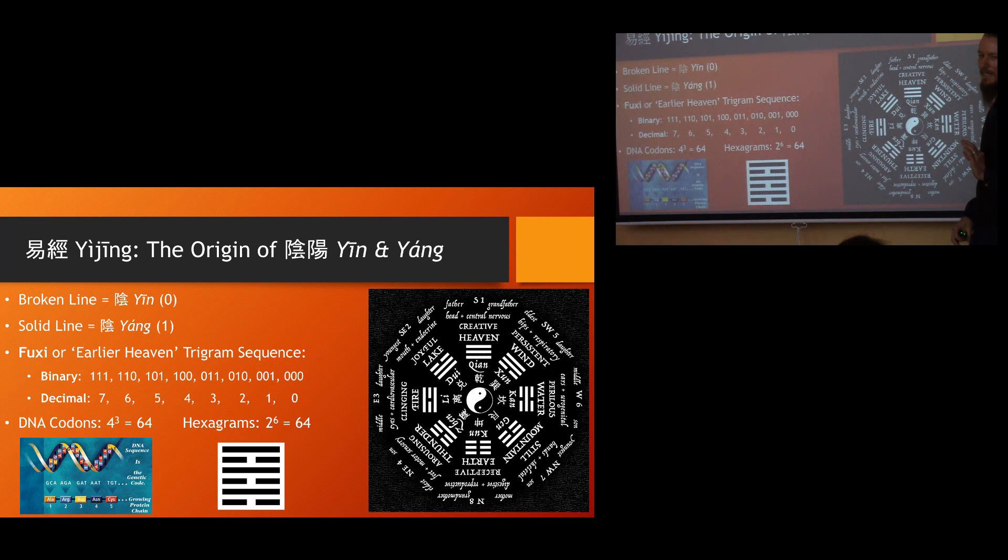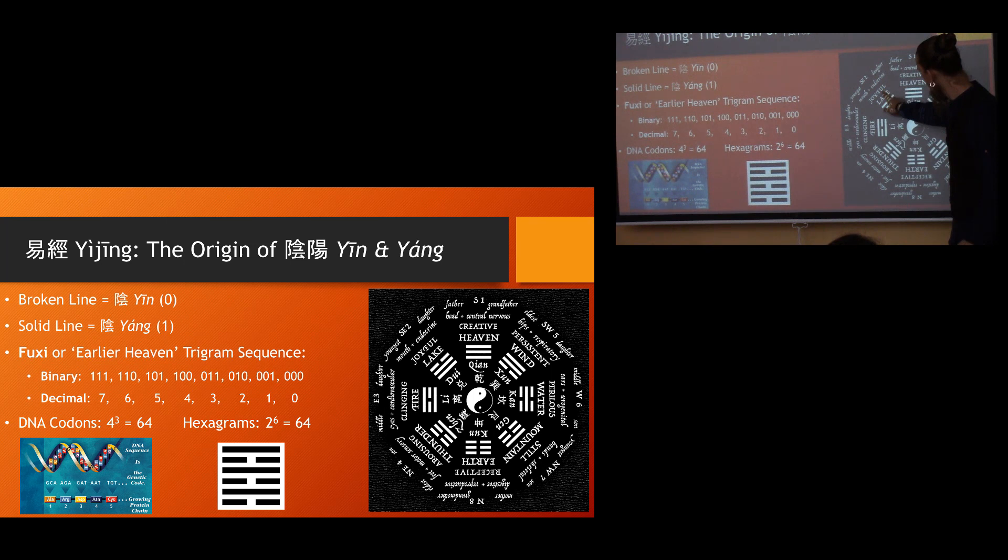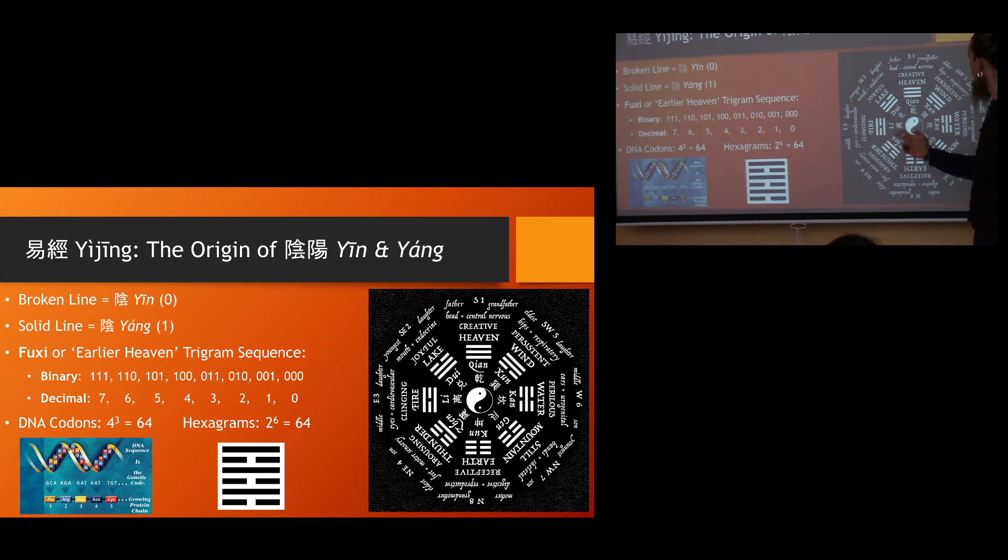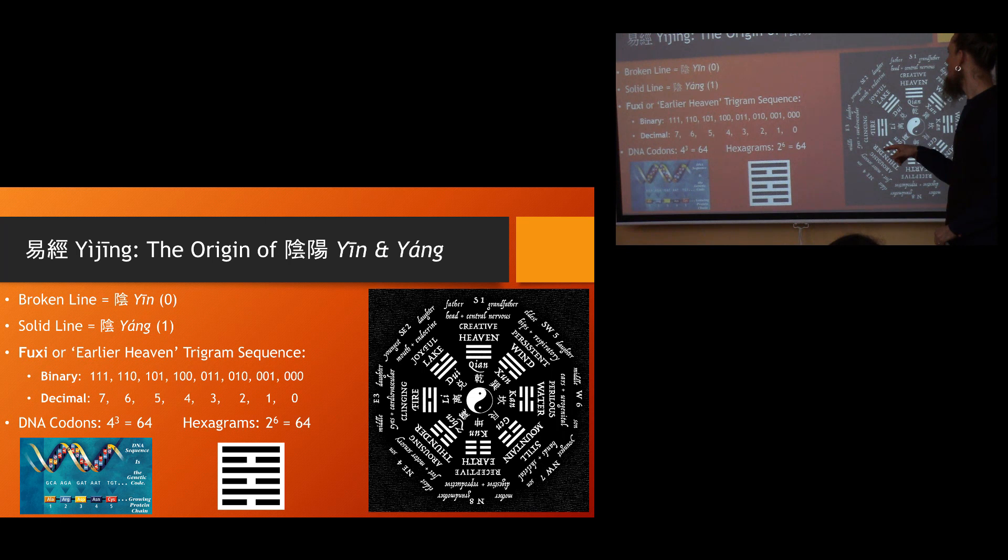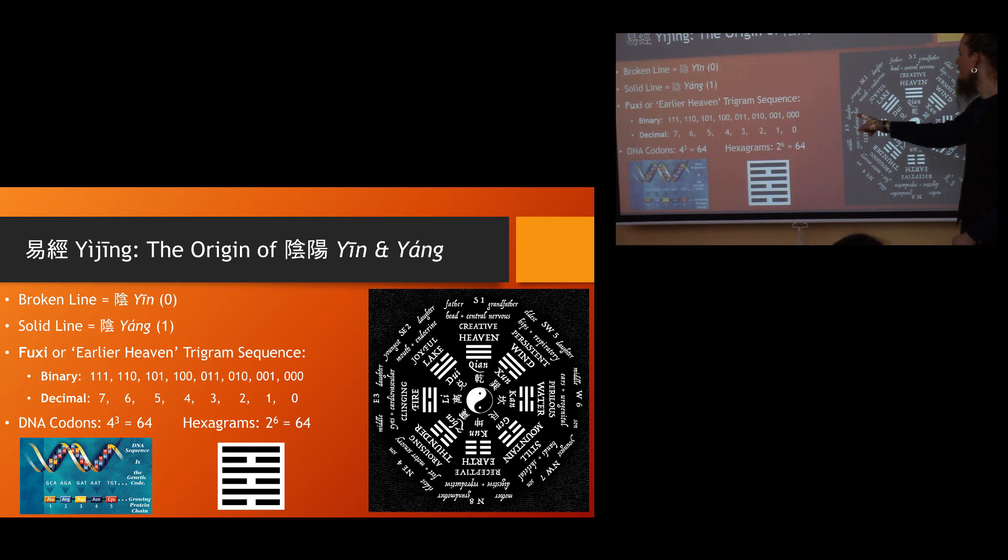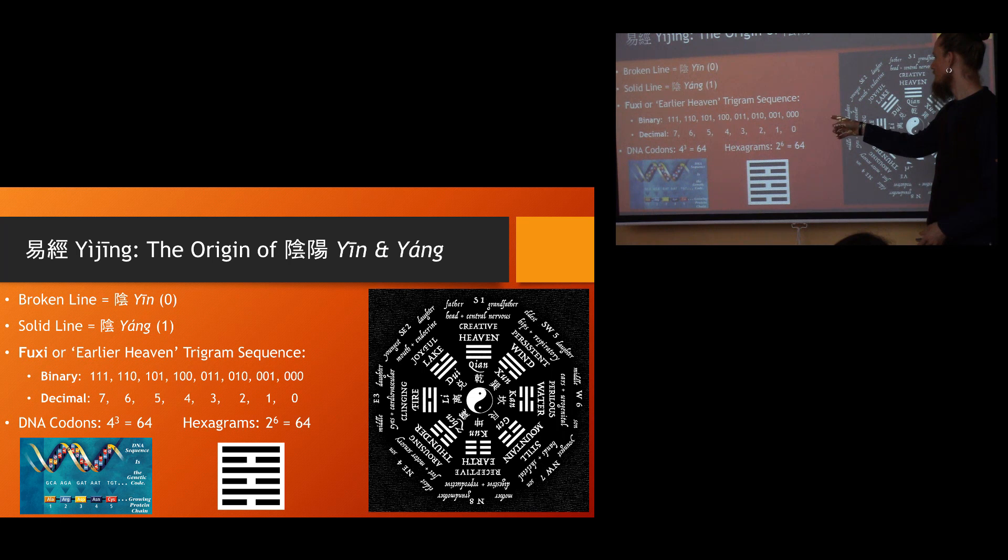So the origin of yin and yang is in the Yi Jing, and I'm just going to barely touch on the Yi Jing because that's a much deeper topic. But I thought I'd point out some interesting things that correlate between Yi Jing and modern science. We can see here this is the original pattern of what's known as the Fuxi or earlier heaven trigram sequence. It starts here and comes down through here, crosses and comes back around. Each of the trigrams that oppose each other are inversions of one another. And if we follow this pattern, looking at the solid lines as ones and the broken lines as zeros, we actually get a binary sequence that when translated into our normal decimal system reads as 7, 6, 5, 4, 3, 2, 1, 0.